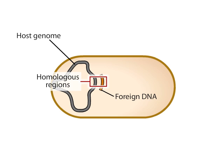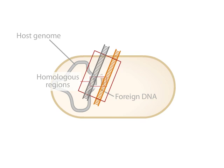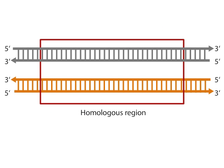then the foreign DNA may be incorporated into the chromosome through a process called generalized recombination. Enzymes participating in generalized recombination find and align homologous stretches of DNA in two different DNA molecules and catalyze an exchange of strands.